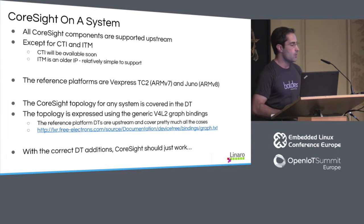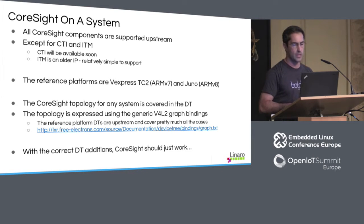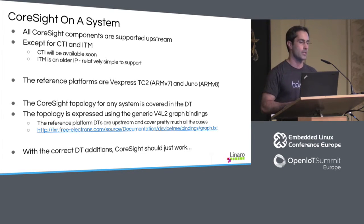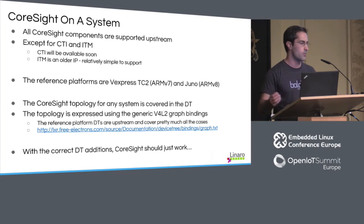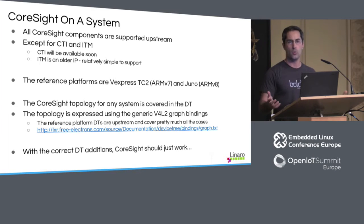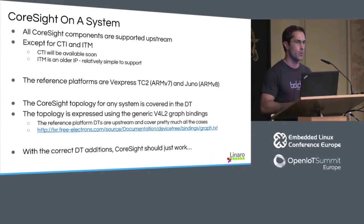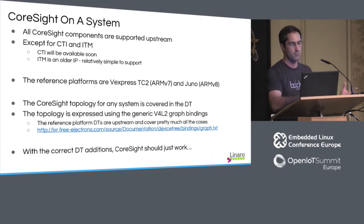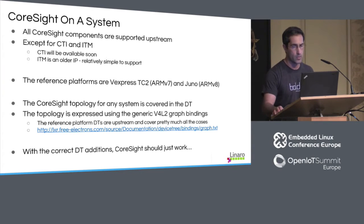When looking at or enabling Coresight on a system there are a few things to consider. Everything we have done so far is supported upstream. We don't have support for CTI (cross-trigger interface) or ITM. The cross-trigger interface is the IP block that allows Coresight devices to synchronize with one another. The ITM is an older specification — if you have one on the board, look at the examples for the more advanced tracers like ETM v3 and ETM v4, skim out what's not needed, and you can get a driver for ITM fairly quickly. I didn't provide an ITM driver simply because I didn't have any hardware.